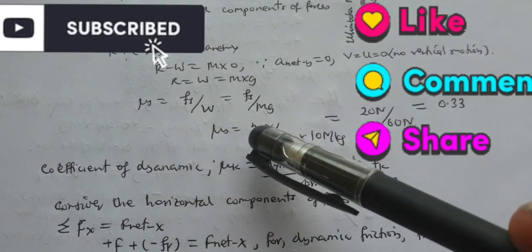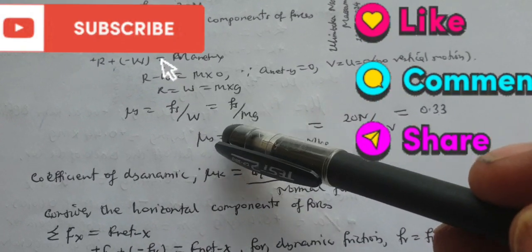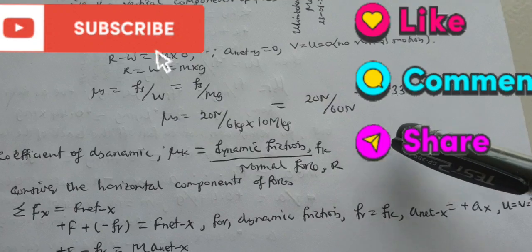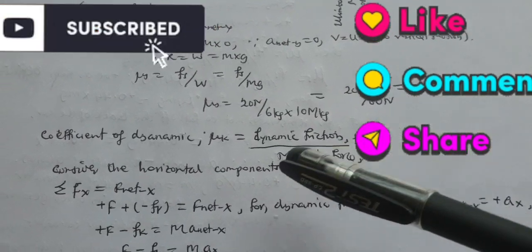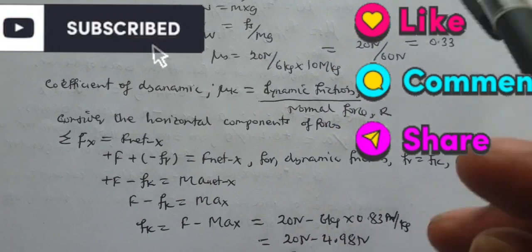The coefficient of static friction, we substitute the value: μ_s equals F_s divided by normal reaction, which gives us 0.33. Coefficient of kinetic friction is equal to kinetic friction divided by normal reaction.